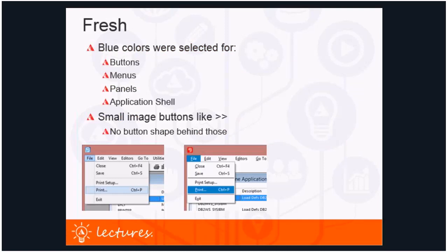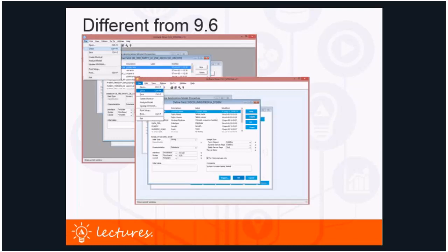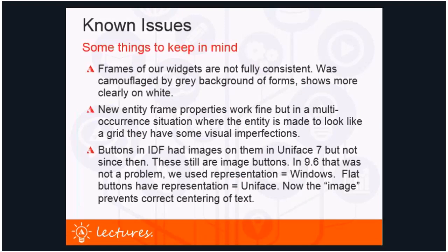To summarize the freshness of Uniface 97: blue colors were selected for buttons, menus, panels, and the application shell, and the small image buttons have no button shape behind them. Here is a good overview of the differences between Uniface 96 on the top left and Uniface 97 in the center of the slide — you can get a good overview of all the different look and feel changes. Because this project was done on a budget, it's not perfect.